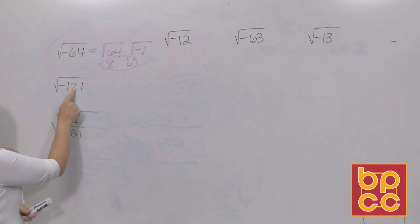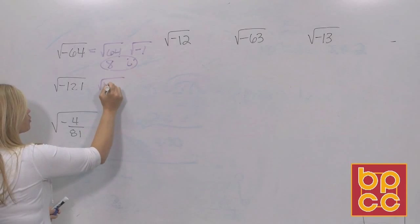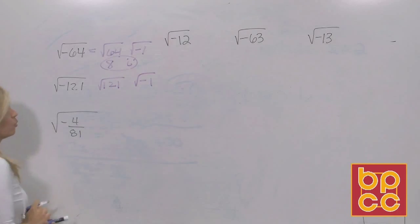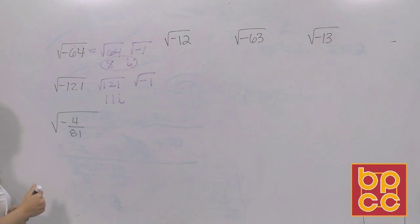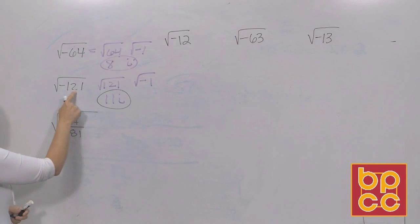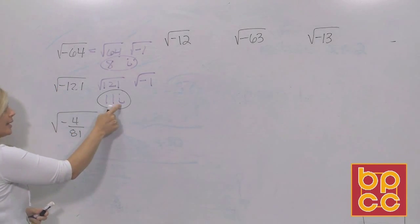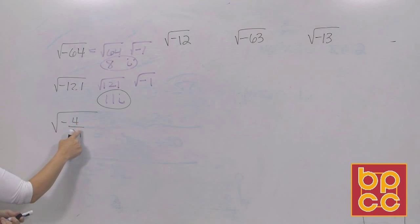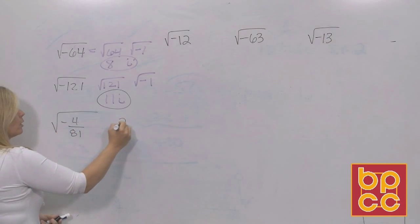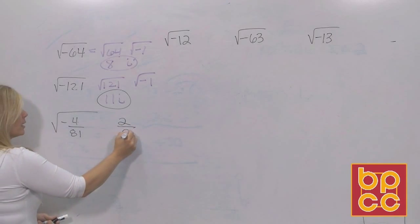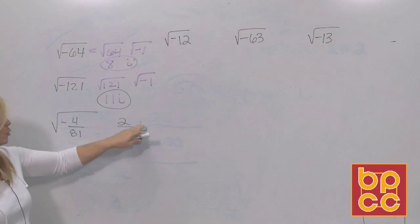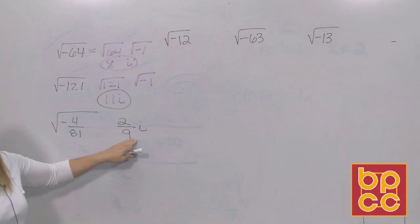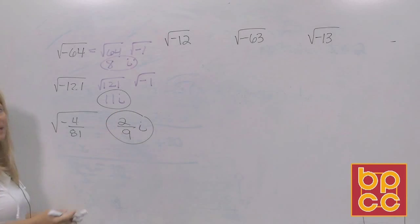The square root of negative 121: that's the square root of 121 times the square root of negative 1. The square root of 121 is 11 and the square root of negative 1 is imaginary, so the answer is 11i. You can do that in your head — the square root of 121 is 11, and since it's a negative under the root, it's imaginary. For a fraction like square root of negative 4/81: the square root of 4 is 2, the square root of 81 is 9, and because it's negative it's imaginary. The i stays to the side — do not put it in the numerator or denominator. So the answer is 2i/9.